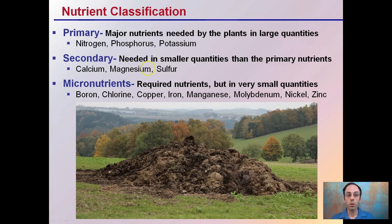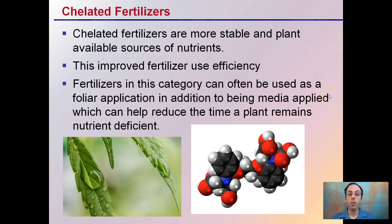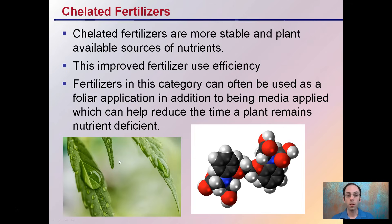Common micronutrients are boron, chlorine, copper, iron, manganese, molybdenum, nickel, and zinc. There are also chelated fertilizers, which are often more stable and plant-available sources of nutrients, so if possible these are usually advised because they improve fertilizer use efficiency. Fertilizers in this category can often be used as foliar applications — applied to the leaves — in addition to being media-applied, which can help reduce the time the plant remains nutrient deficient.